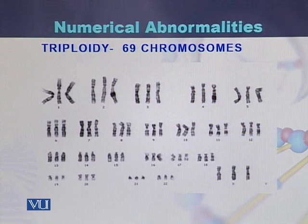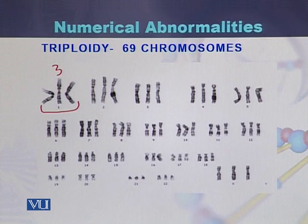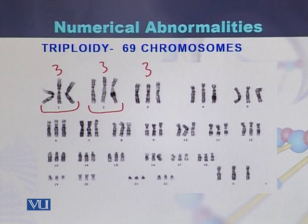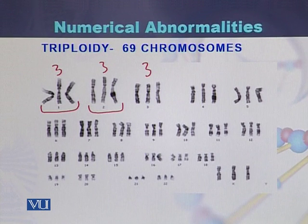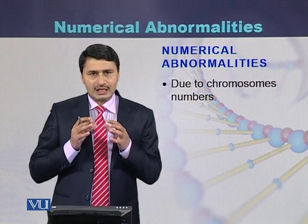A third type of numerical abnormality is called triploidy. Triploidy is a phenomenon where each set of chromosomes is present in three copies instead of two — there are three chromosomes per set rather than two. Triploidy is also an example of numerical abnormalities. Usually these individuals do not survive. In summary, numerical abnormalities are abnormalities due to variation in chromosome number.